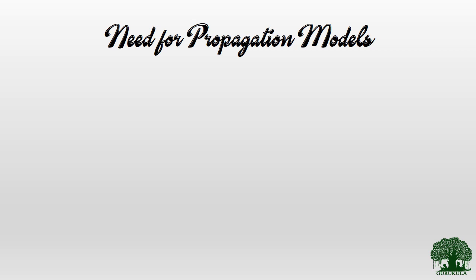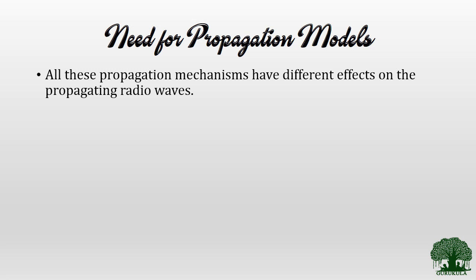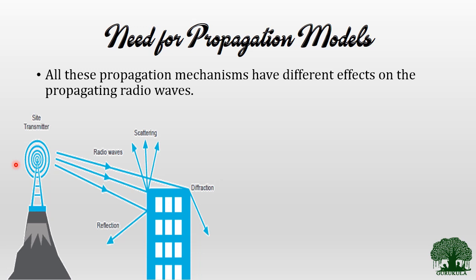Why do we need a propagation model? All these propagation mechanisms have different effects on the propagating radio waves. If my receiver is somewhere in the environment, it is going to receive the reflected wave, the scattered wave, and the diffracted wave — meaning it receives multiple copies of the radiation from the transmitter. These are the same message but in different versions, and we call them multipath components.